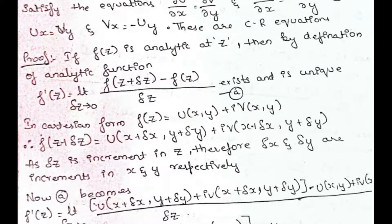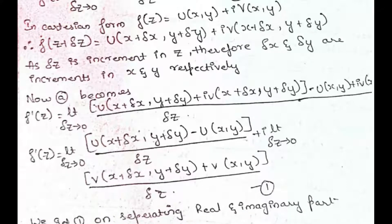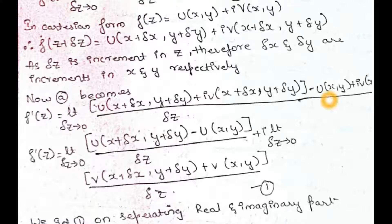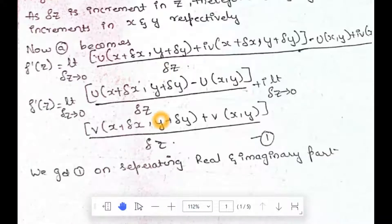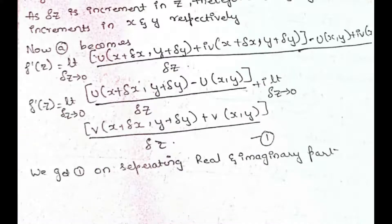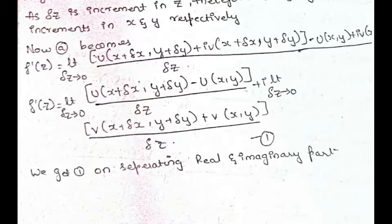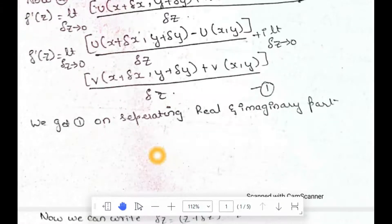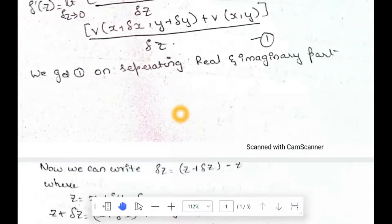Substituting f(z + δz) and f(z) into the definition, the equation becomes u(x + δx, y + δy) + iv(x + δx, y + δy) minus f(z), all divided by δz. We then separate the real and imaginary parts: f'(z) = limit δz→0 of [u(x + δx, y + δy) - u(x, y)] / δz plus i times limit δz→0 of [v(x + δx, y + δy) - v(x, y)] / δz.